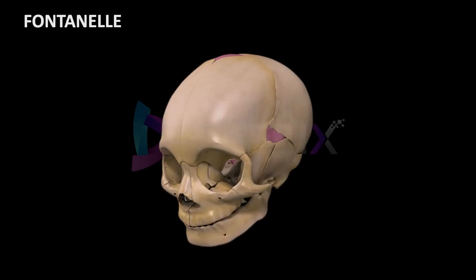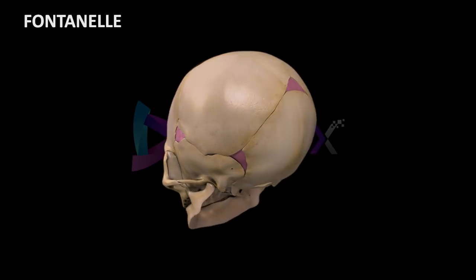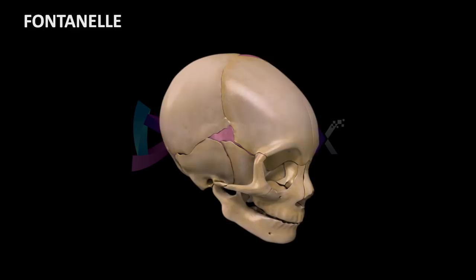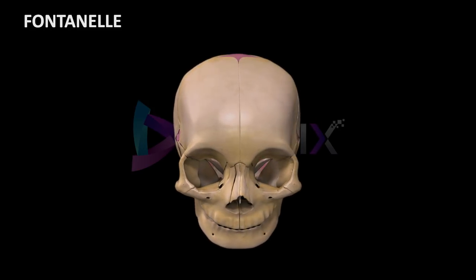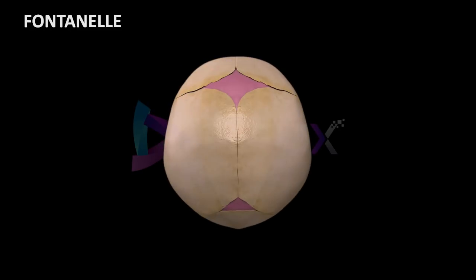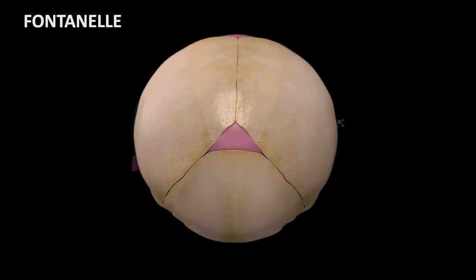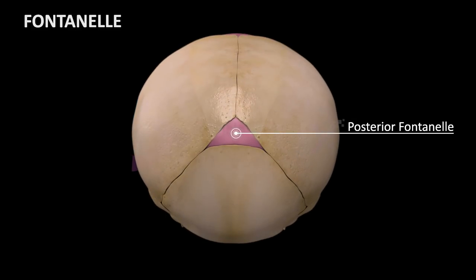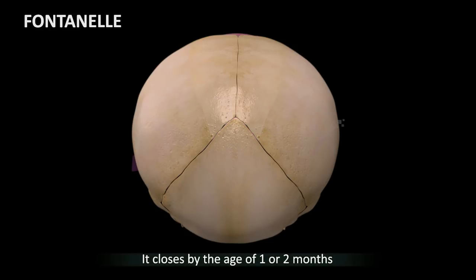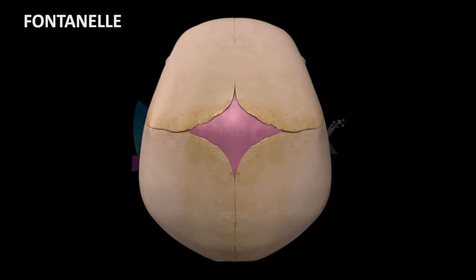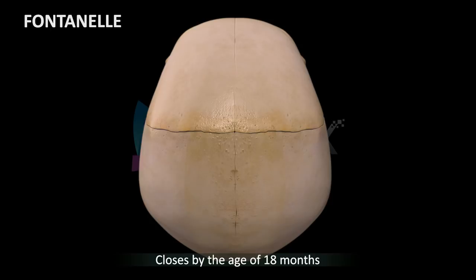The fetal cranium has a number of soft areas called fontanelles. At birth there are six fontanelles, out of which two prominent ones are recognised. The posterior fontanelle is present at the back of the head and closes by the age of one or two months. The anterior fontanelle, also known as the frontal fontanelle, is the largest fontanelle. It is present on top of the head and closes by the age of 18 months.